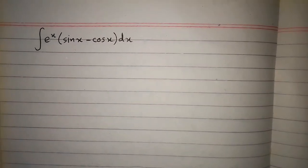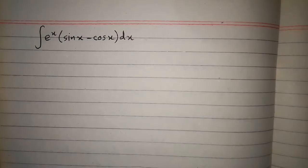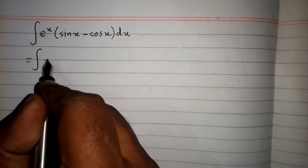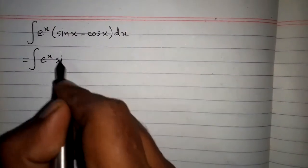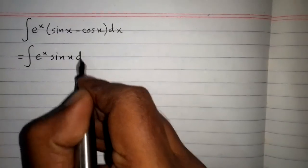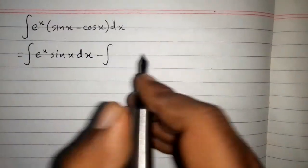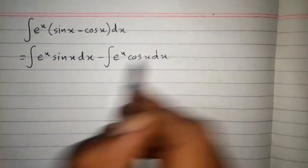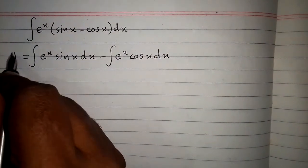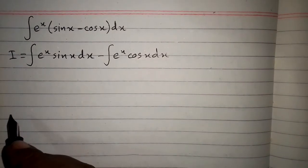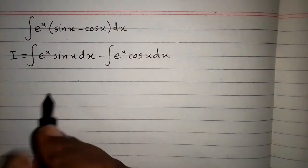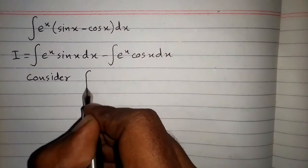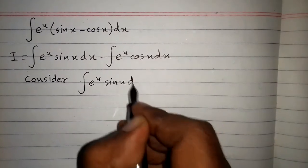In this video we will find the integral of e to the power x times sin x minus cos x. First we will expand this integral, so we have integral of e to the power x sin x minus integral of e to the power x cos x. Suppose this combined integral is i. We will consider one of these integrals, specifically the integral of e to the power x sin x dx.